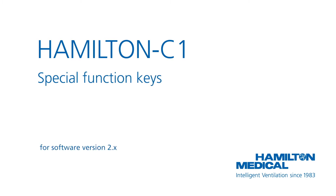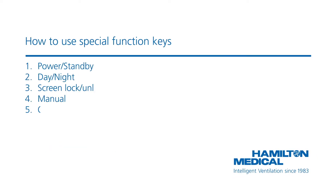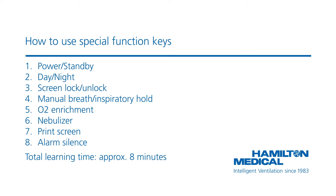This how-to video will show you the special function keys available on your Hamilton C1 and how to use them. You can use exactly the same information if you are operating a Hamilton T1 or Hamilton MR1 ventilator. The keys on the front of the ventilator give you access to some important functions, including entering standby mode and pausing the audible alarm. You should be able to complete the whole module in less than 8 minutes.